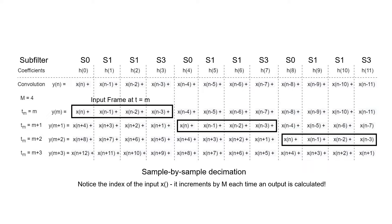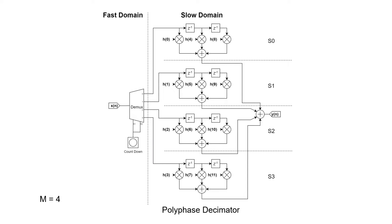This results in the input samples shifting by M taps between each filtering operation. Using this property, it's possible to group the input into frames of M values, where each value from the frame is fed into a dedicated sub-filter. Therefore, the filter is split into four phases, each receiving one value from the input frame. In a real implementation, the sub-filters receive the input values once the whole frame is received, allowing them to operate at the output sampling rate. Therefore, the polyphase decimator improves the computational load by performing the filtering operation at the slower sampling rate.